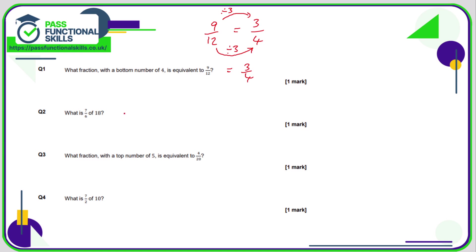Question two is a fraction of an amount: what is seven sixths of 18? What we need to do is take our total, divide it by the number on the bottom, and then multiply by the number on the top. 18 divided by six is three, and three times seven is 21.